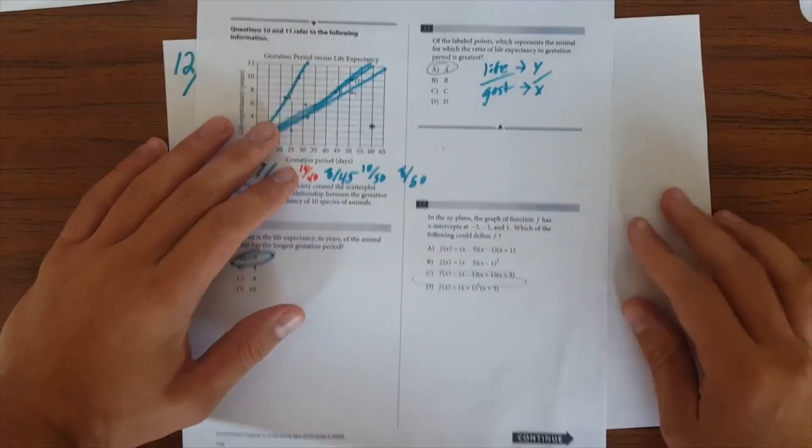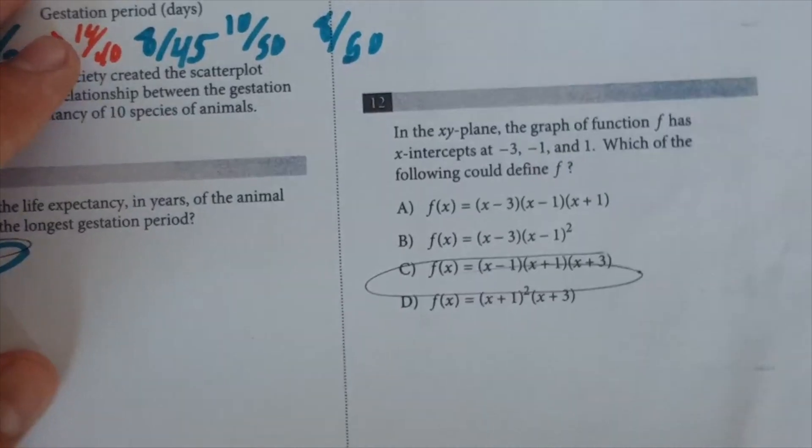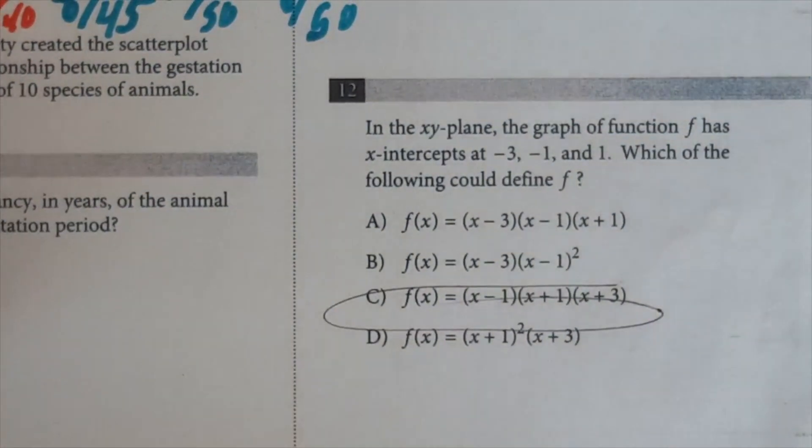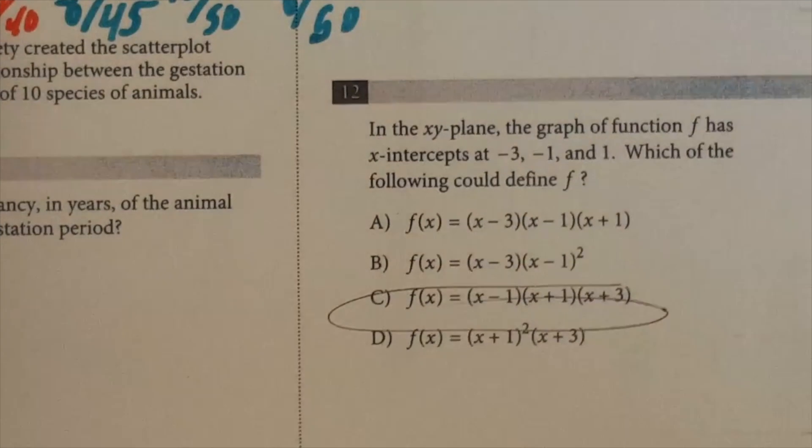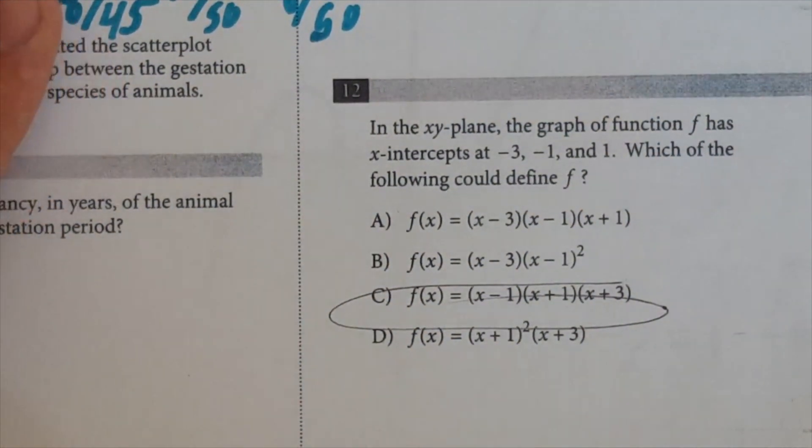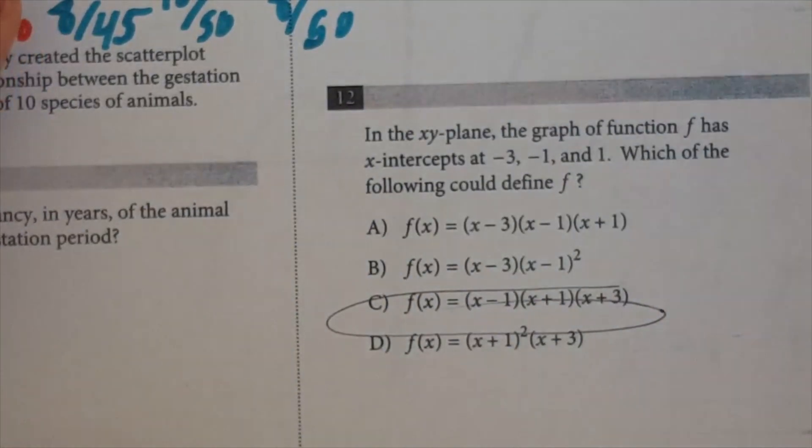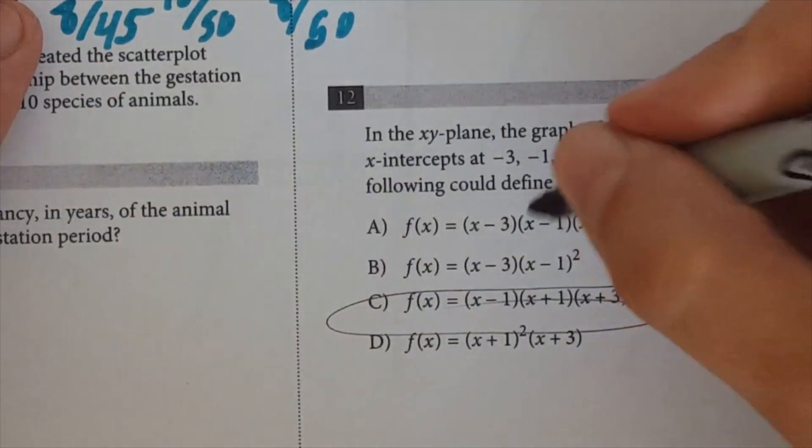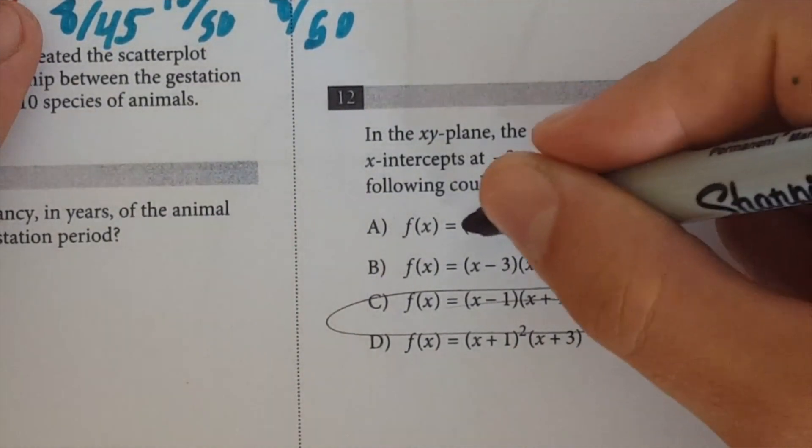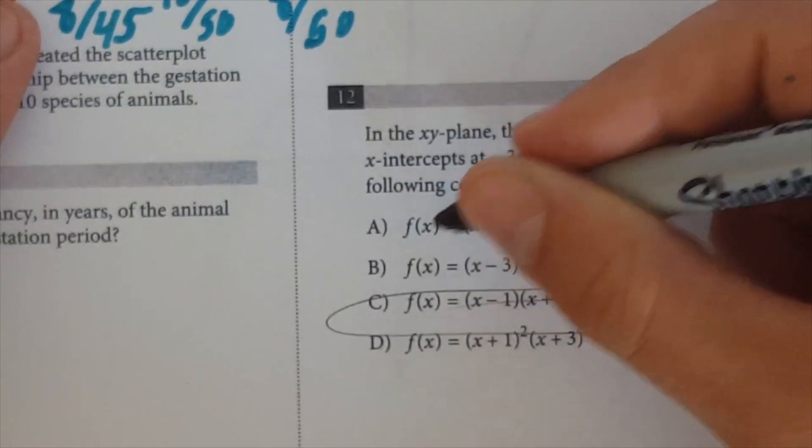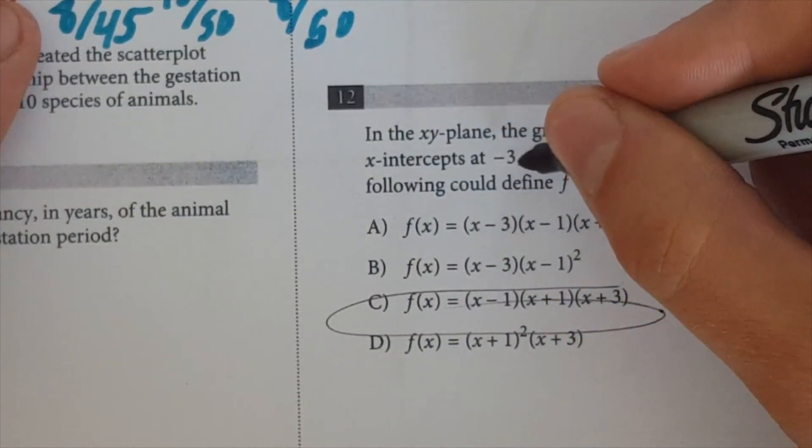And so now, if you look back at the options that they give you, right, clearly the answer is C. Sorry, I circled that for you guys. I didn't mean to spoil it with fun. What you want to do is plug in these values in here and see if you get, you know, f of x, y equals to 0 for these values. So for A, if you plug in minus 3, you're not going to get a 0.